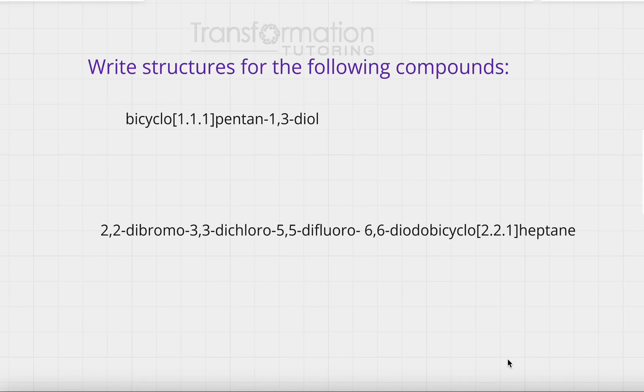Let's learn how to write structures for bicyclic compounds. Here we have bicyclo[1.1.1]pentane-1,3-diol. The first thing I will look at is these brackets - the numbers inside represent the number of carbons that my bridges have.